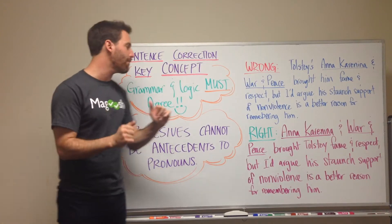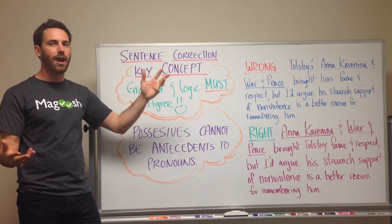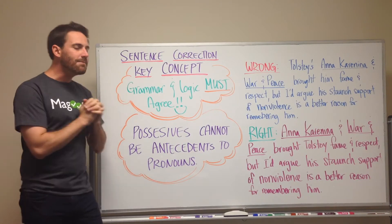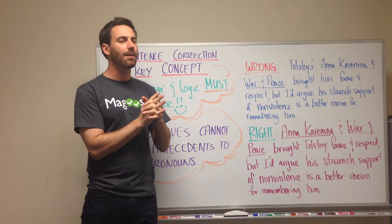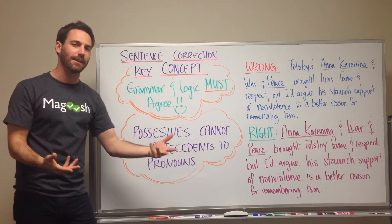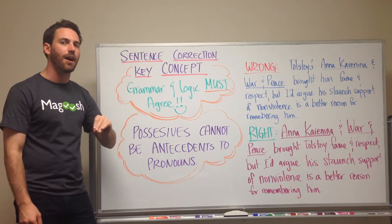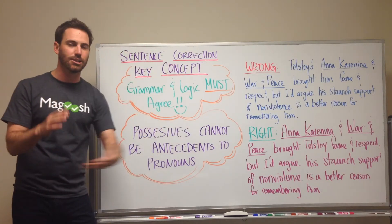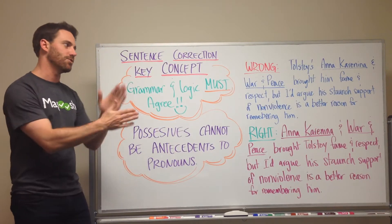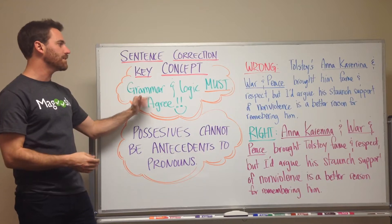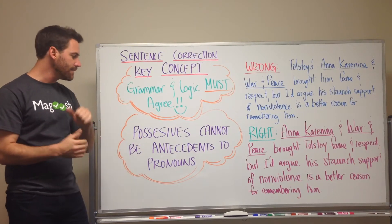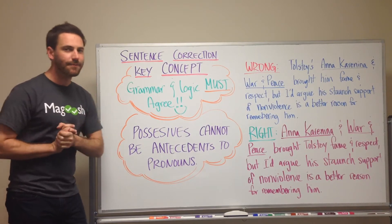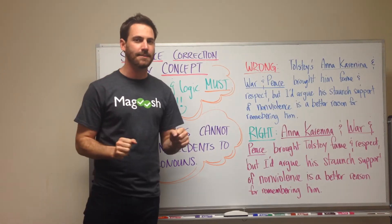Oftentimes we can get by with just logic — we can logically figure out what the author is talking about if they leave things out. On the GMAT, they are trying to capitalize on our ability to just make sense of things and see if we can actually identify poor grammar or poor writing, things you would be expected to do as a graduate student. And so what this means for possessives is that possessives cannot be an antecedent to pronouns — a possessive noun cannot be the antecedent to a pronoun.